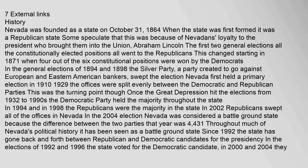In the general elections of 1894 and 1898, the Silver Party — a party created to oppose European and Eastern American bankers — swept the election. Nevada first held a primary election in 1910. From 1910 to 1929, offices were split evenly between the Democratic and Republican parties. Once the Great Depression hit, from 1932 to the 1990s the Democratic Party held the majority throughout the state. In 1994 and 1998 the Republicans were the majority in the state.